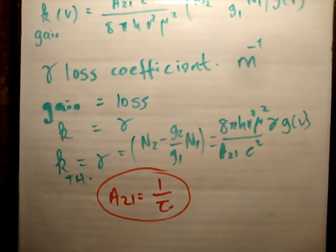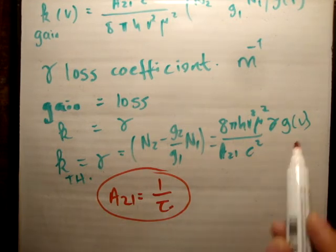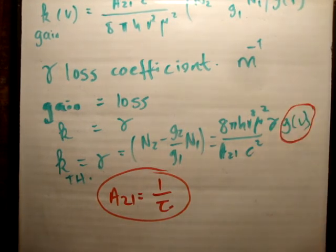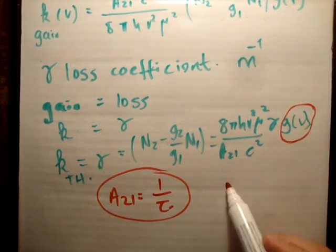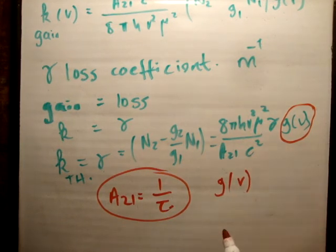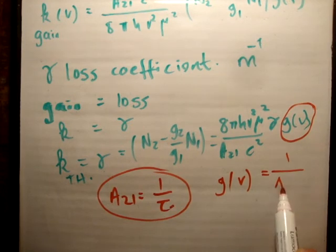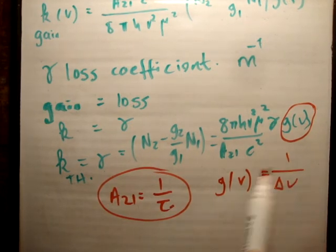And what else is measurable? Oh yes, your probability, or your line shape function here, G nu, is measurable as well. Because that's equal to 1 over your full width at half maximum, which is delta nu. So we're able to basically measure all these little parameters here. And as a result, we'll measure our gain coefficient for threshold.